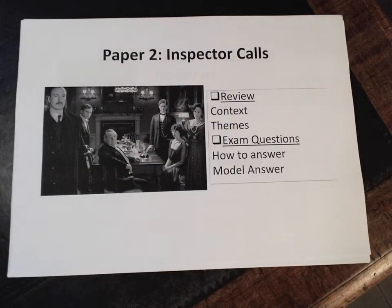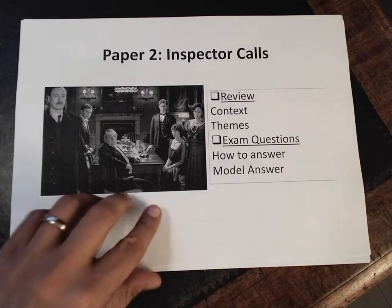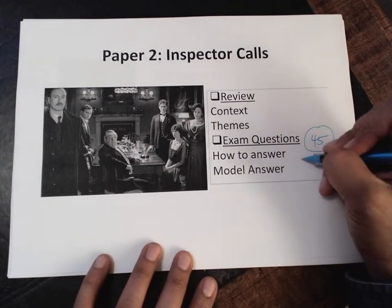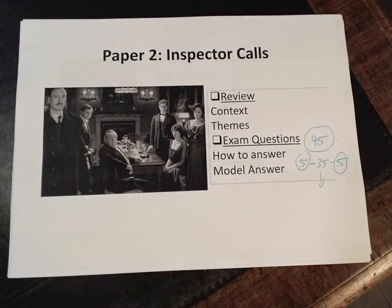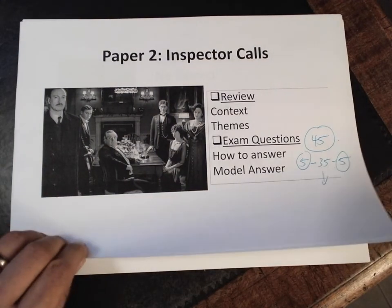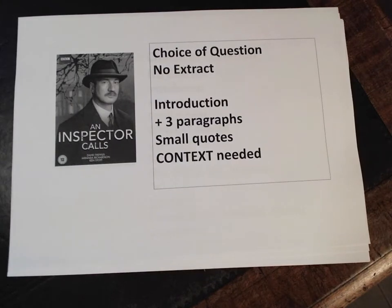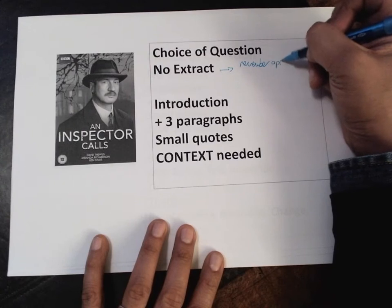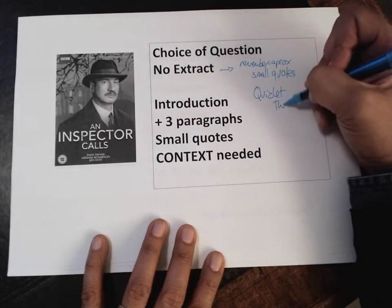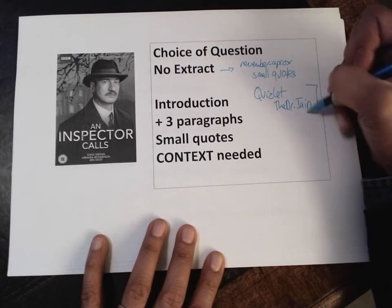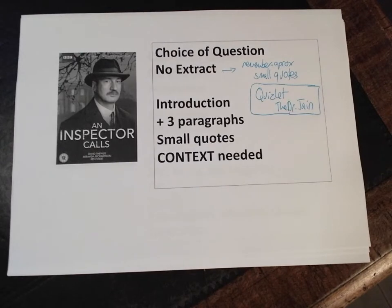That's a brief outline of the context and themes of An Inspector Calls. You have 45 minutes for this question — I break that down as five minutes planning, 35 minutes writing, and five minutes editing. It's crucial to edit to do well in English. You do get a choice of question. Unlike paper one, there's no extract, so this is very challenging — you have to remember or approximate small quotes. If you go to Quizlet and find Dr. Jane, you'll find slides for all my quotes for every portion of this exam. I highly recommend downloading that onto your phone. Otherwise, make your own notes and start remembering small quotes for each character.